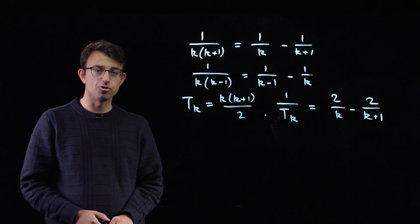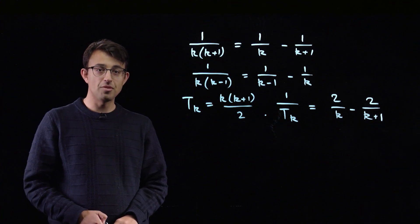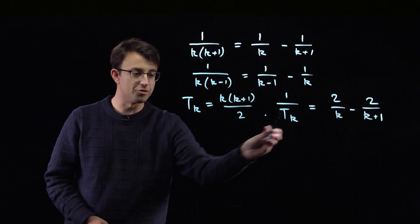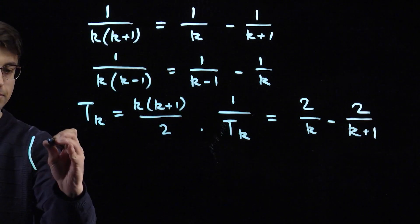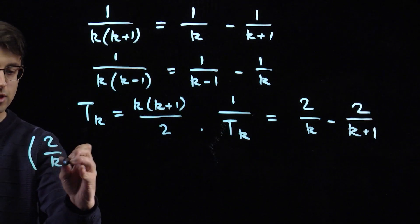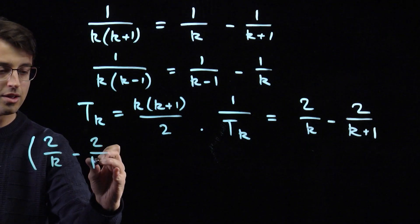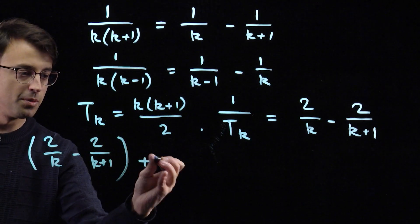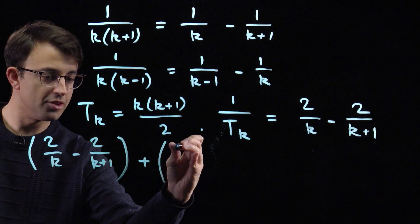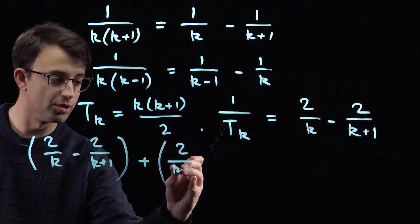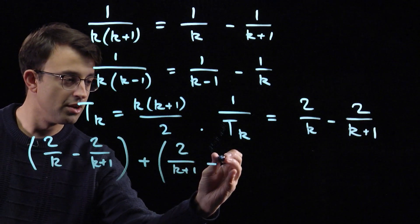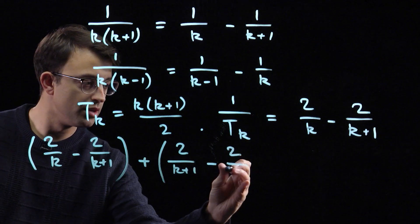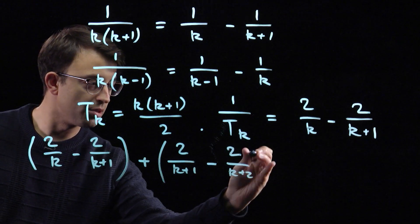The next key algebraic step is to add up several consecutive terms of this form. So we've got 2 over k minus 2 over k plus 1. That's the reciprocal of tk. Let's take the reciprocal of the next triangle number. That's going to be 2 over k plus 1 minus 2 over k plus 2.